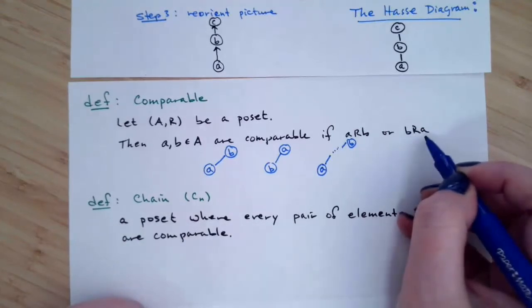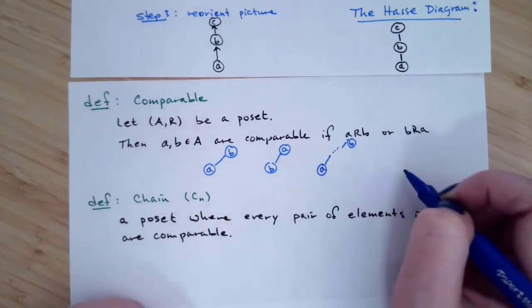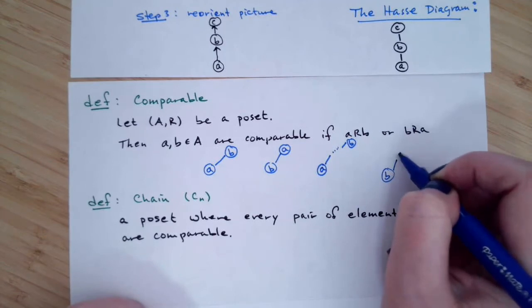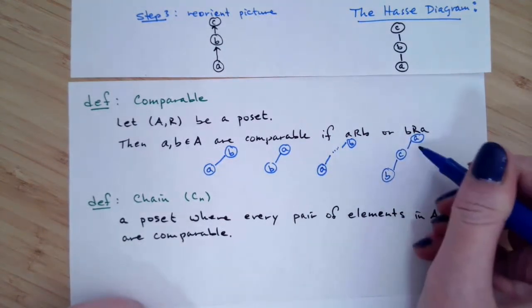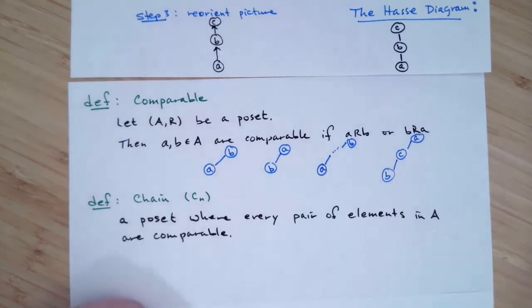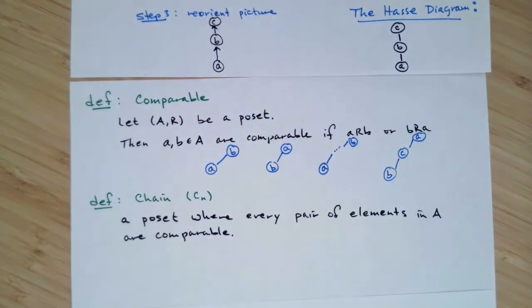The only thing is one of the two of these vertices, A or B, has to be below the other one. So maybe you have something like this: here A and B would still be comparable even though you went through that middle vertex C.